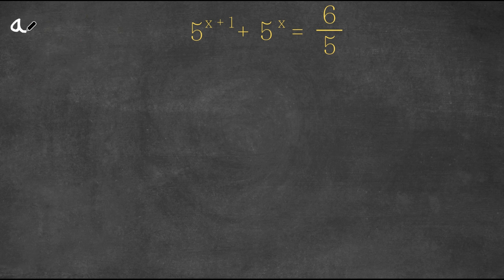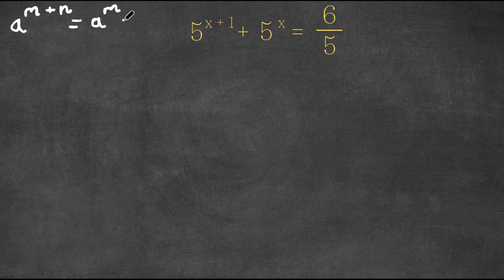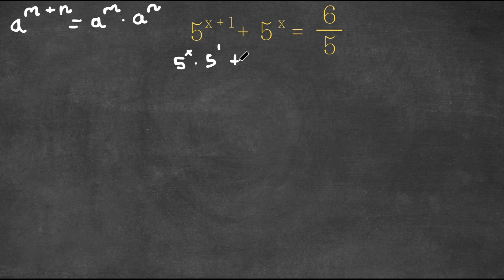Now if we have something in the form a to the power of m plus n, this is equal to a to the power of m times a to the power of n. So 5 to the power of x plus 1 is going to equal 5 to the power of x times 5 to the power of 1. So we have that plus 5^x is equal to 6 over 5.